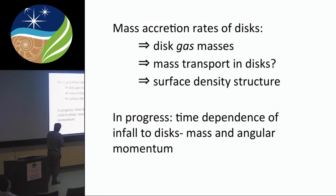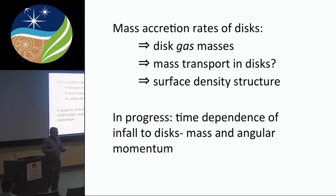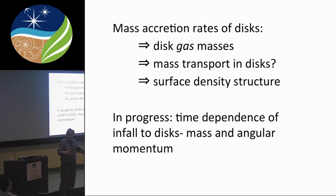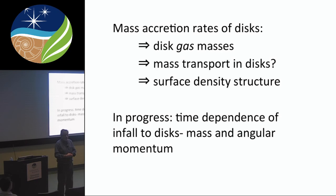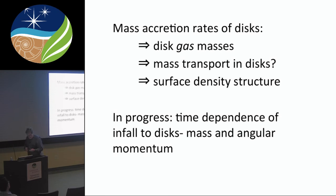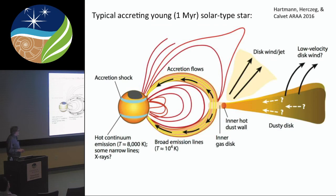That leads into discussing mass transport and what the surface density structure in the disk might be — not just how much mass there is but where it is and at what radius. At the end, I want to talk about work in progress: disks don't appear from nowhere; there's a collapse process of gas and dust that forms both the star and the disk, and depending on how that occurs, you can get very different protoplanetary disk structures.